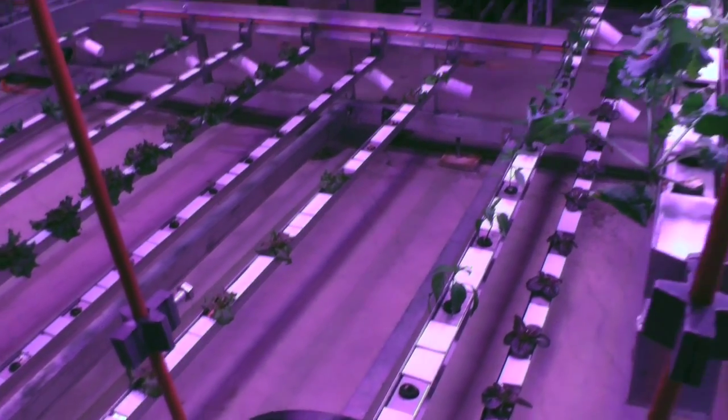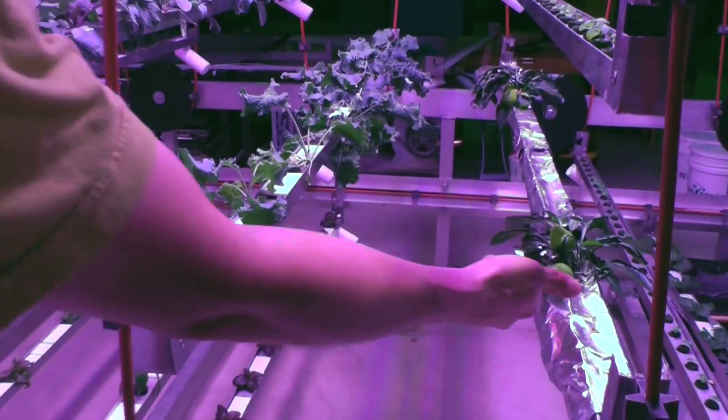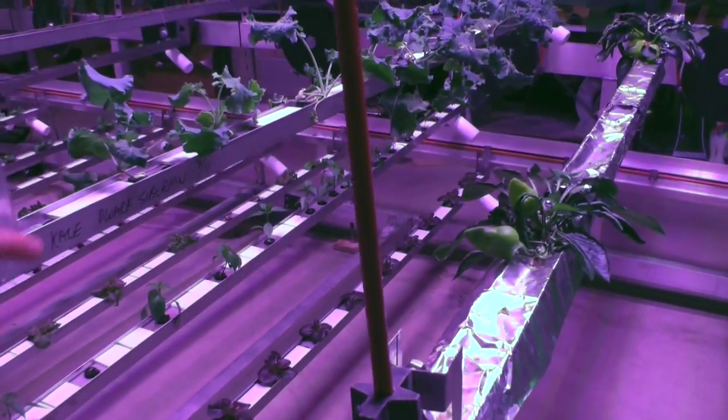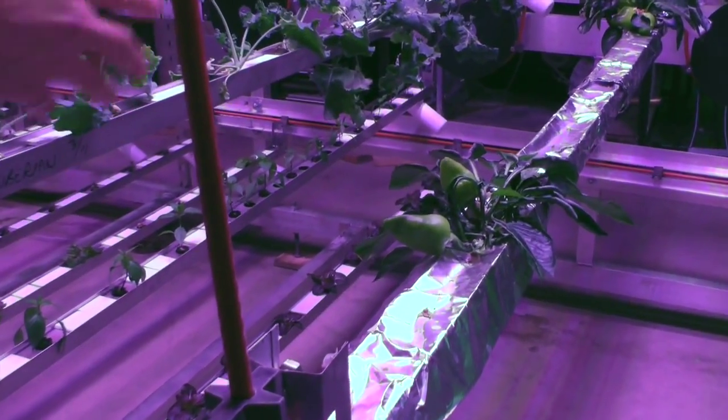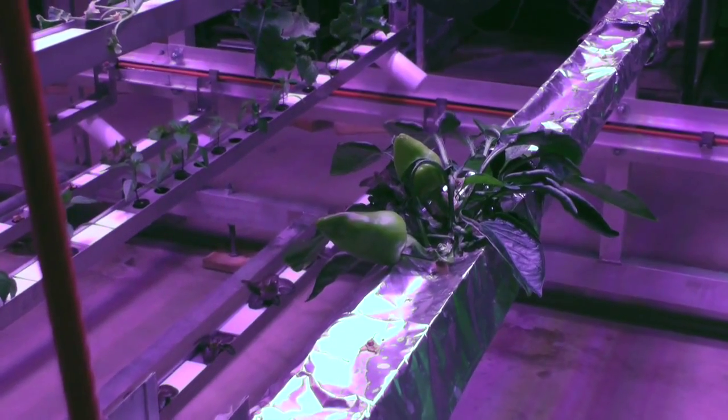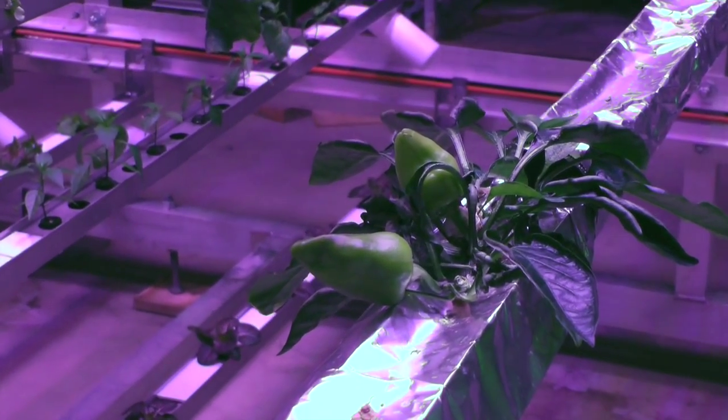We have some larger peppers that are already to the fruiting stage that you can see here and there's another one over there. They're producing the flowers and then fruiting, and we're figuring out how much yield we can get out of these cycling through this.